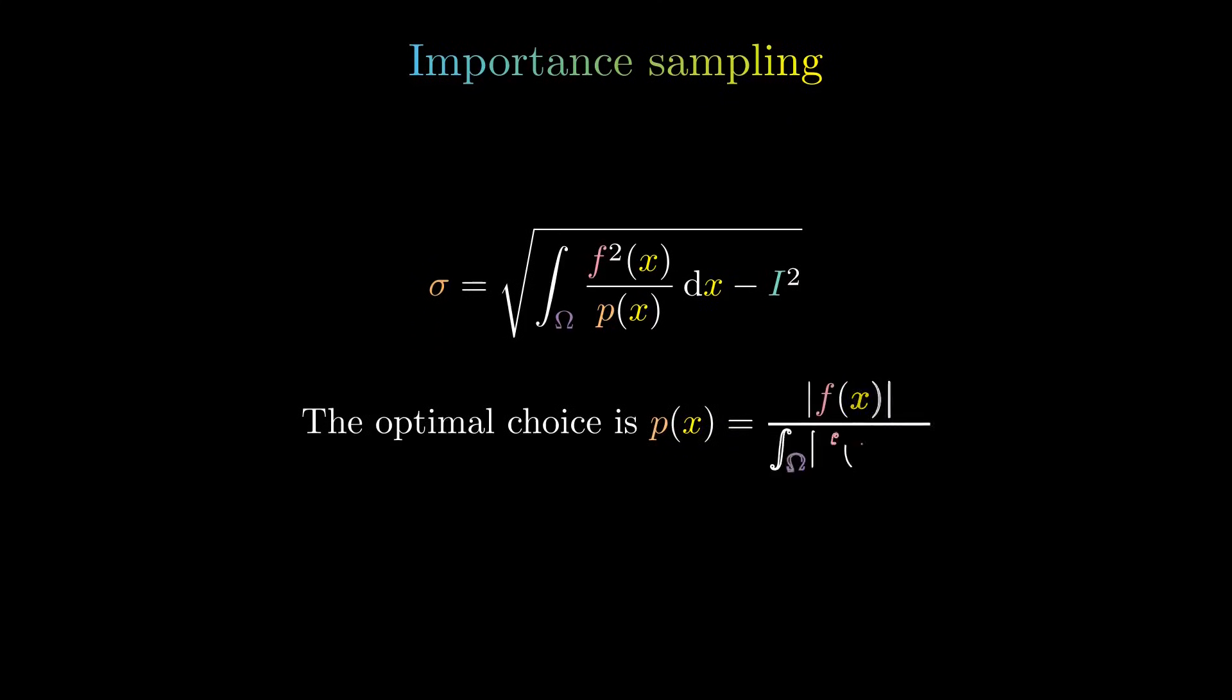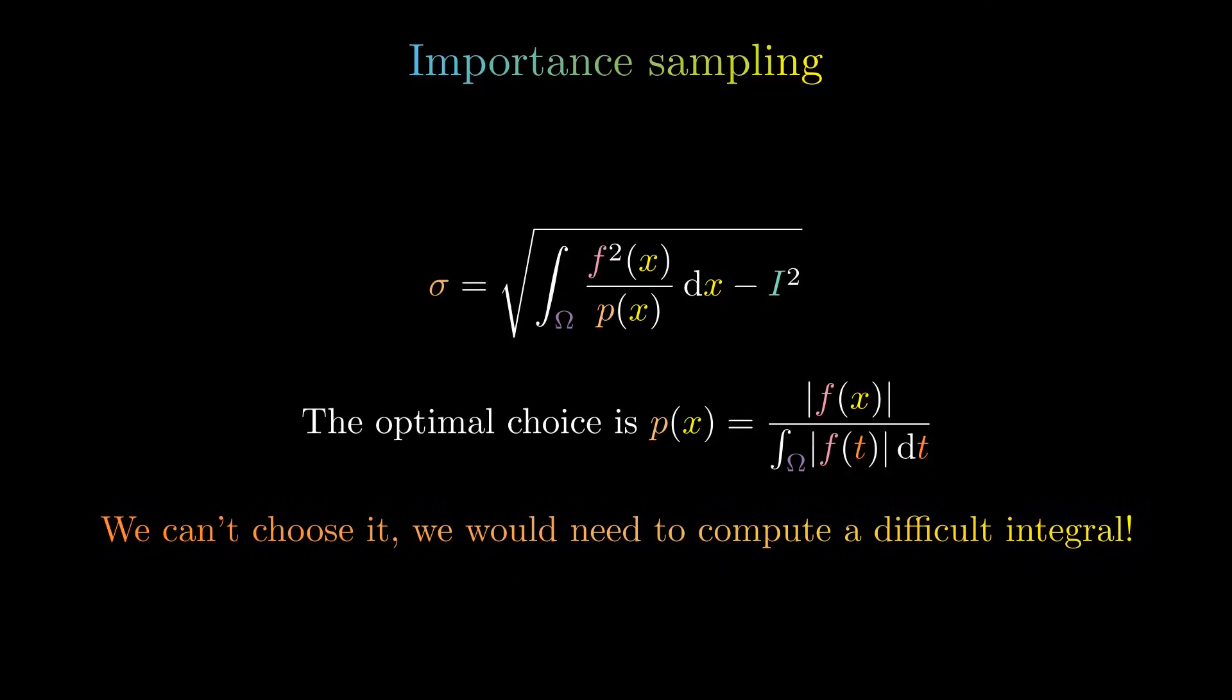The optimal choice of P, that is, the one that minimizes sigma, is the absolute value of F divided by the integral over omega of the absolute value of F.